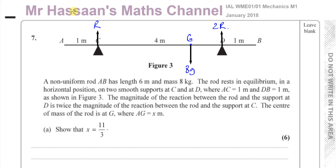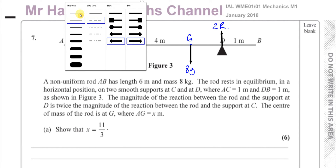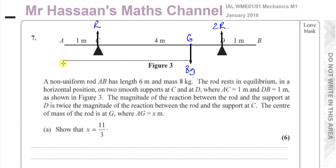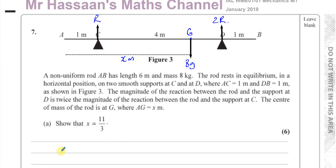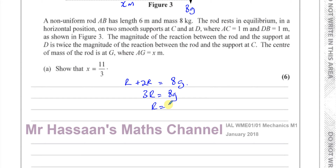The weight of the rod is 8g newtons, and the distance of the center of mass from A is x meters. Since the rod is in equilibrium, the upward forces must equal the downward forces. So r plus 2r equals 8g, giving us 3r equals 8g, therefore r equals 8g over 3. That's one piece of information we can use to solve the problem.